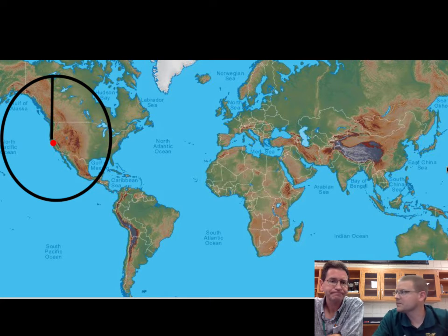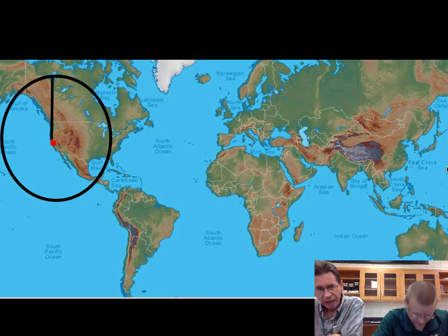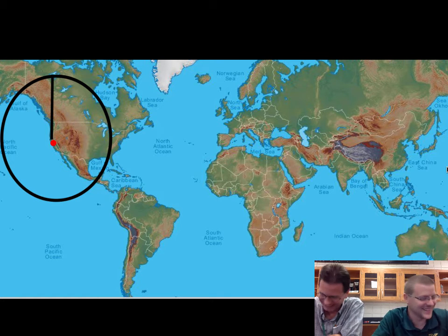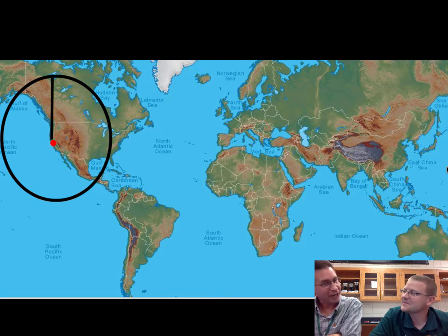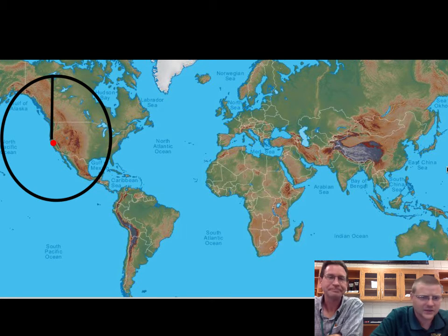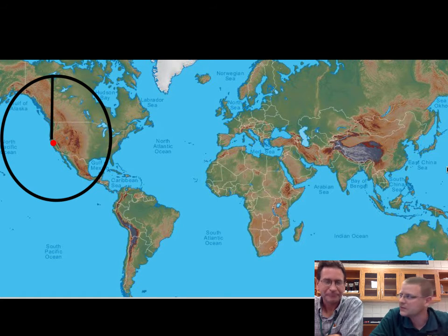Alright, so we found the earthquake then. We did not find the earthquake, because just like a GPS system, we need to triangulate position. Triangulate, so triangles, three. Three. We can't just use one station, we need three.